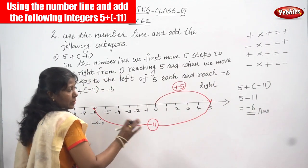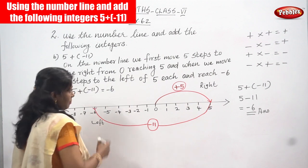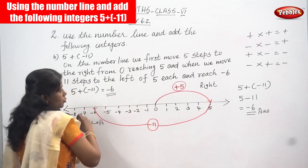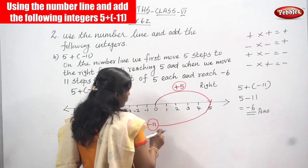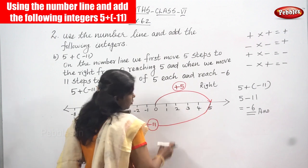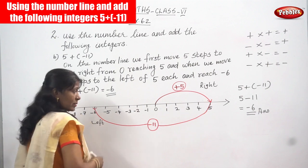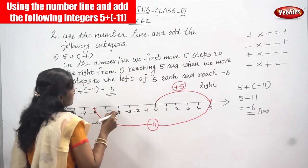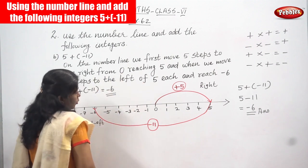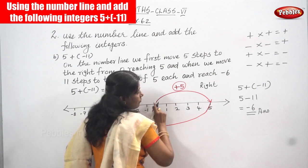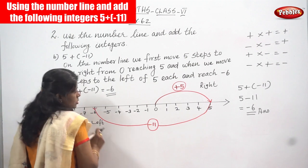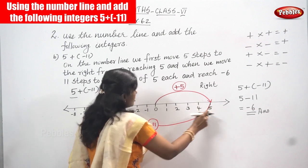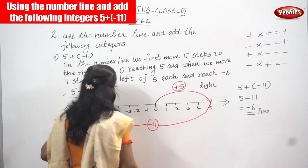That was the method without the number line. Now we use the number line. First, you draw the number line and write the numbers — positive integers on the right side, negative integers on the left side. The first step: from zero, move five steps to the right, reaching 5. Start from zero and reach 5 — that is the first step.